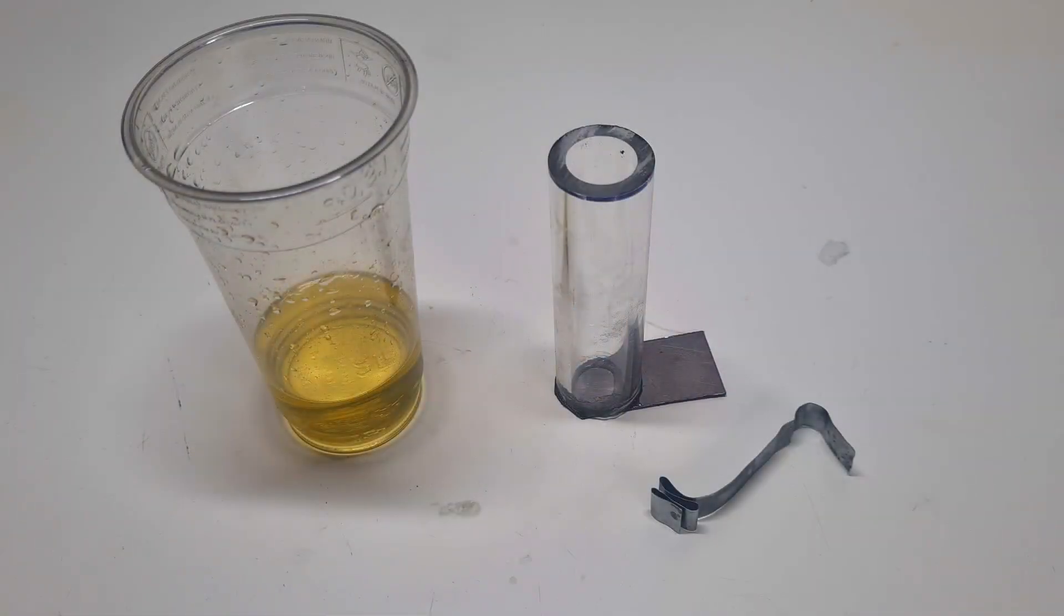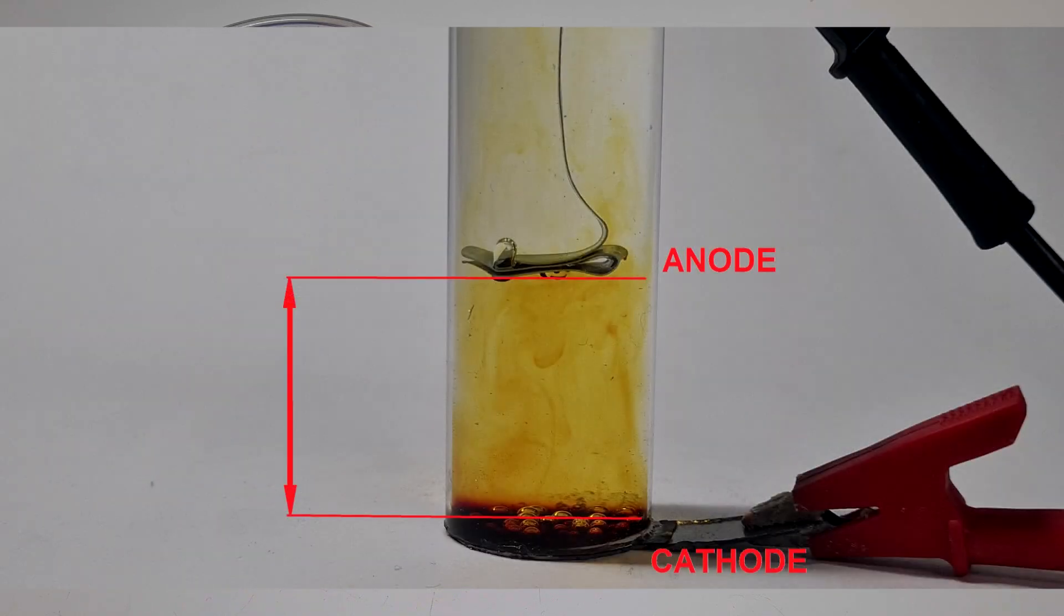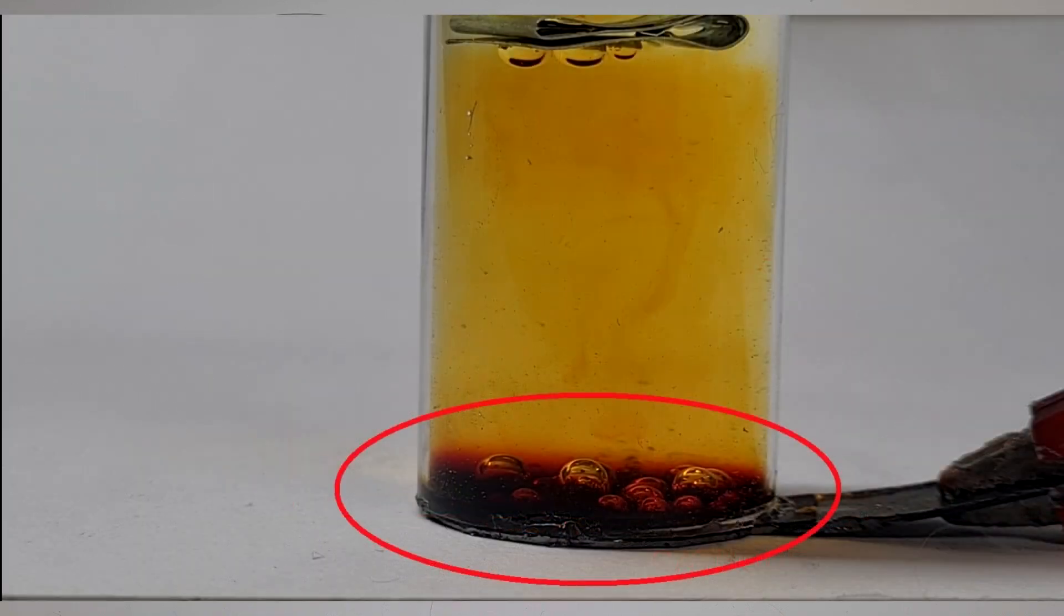When I made this basic zinc-iodine gravity battery, the performance of the battery was not so good. And this is because the distance between the anode and the cathode was a little bit too big, and I also had some limited surface area for creating iodine.